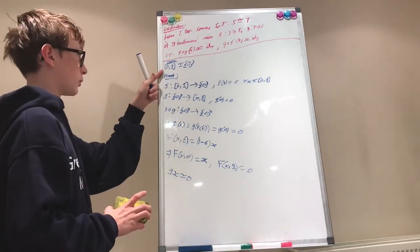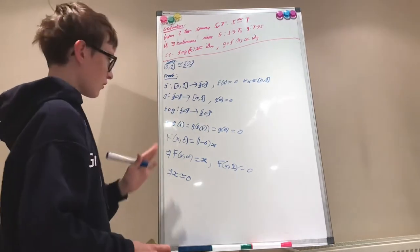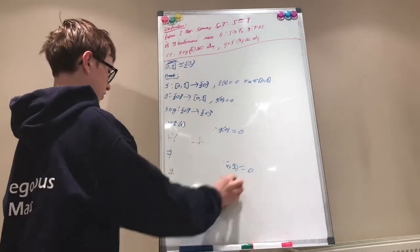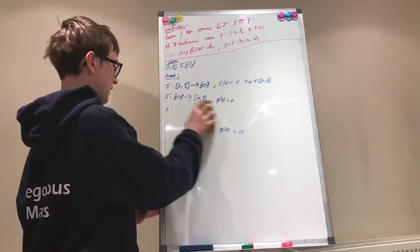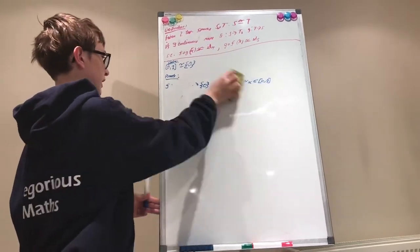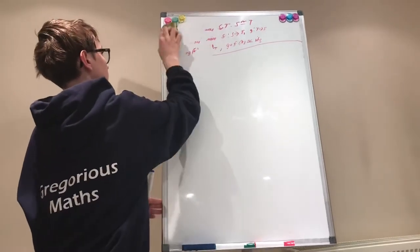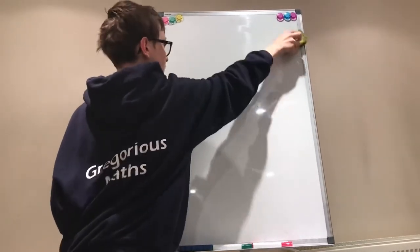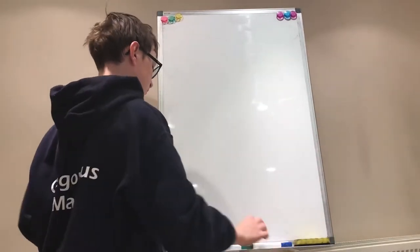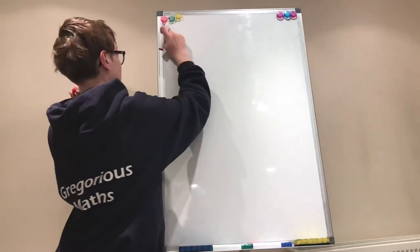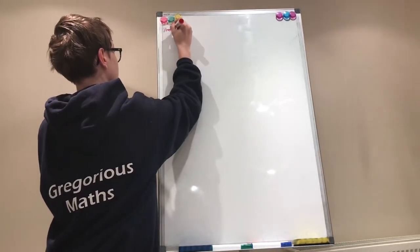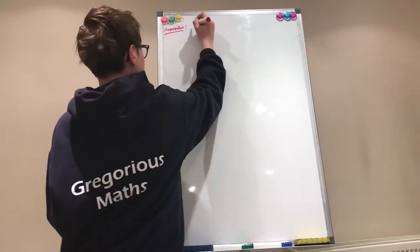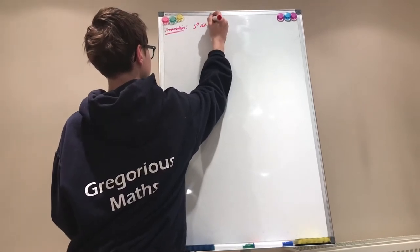A space such as the closed interval between 0 and 1, which is homotopic to a single point, is called contractible. And now I'm going to show that the 0-sphere cannot be contractible. So let's take a quick look at a proposition: the 0-sphere is not contractible.